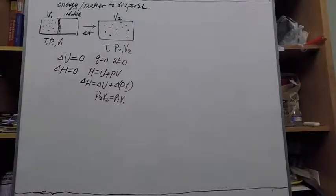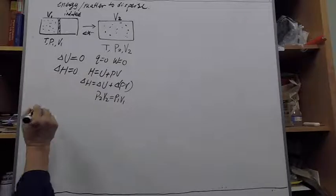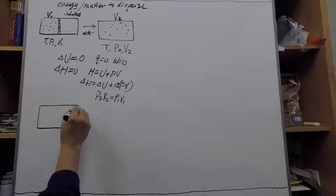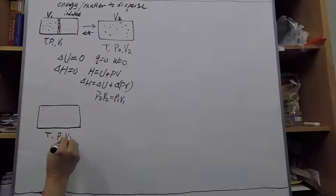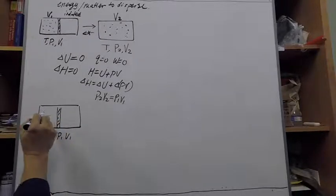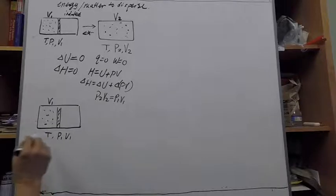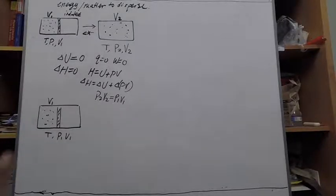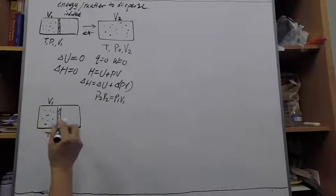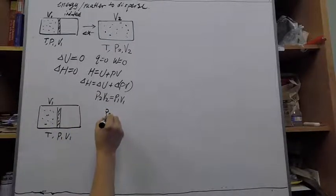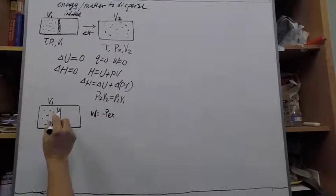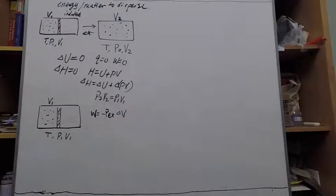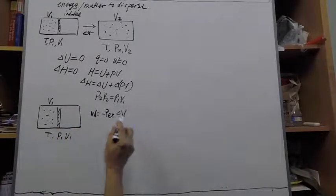With that in mind, let's imagine taking the ideal gas from the left state T, P₁, V₁ and instead of letting it spontaneously disperse, we actually ask it to do work. This way we can measure something associated with this process. For example, if we let the gas expand against external pressure, then the work would be the external pressure times the volume change involved in this process.